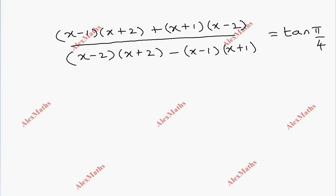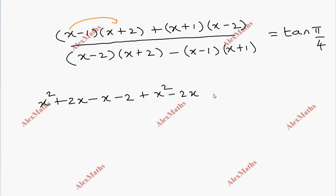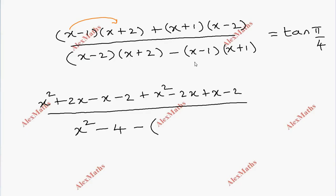If we expand each term: x squared plus 2x minus 1 minus x minus 2, and x squared minus 2x, multiplied by 1 times x minus 2. The denominator uses the identity a plus b into a minus b equals a squared minus b squared, so we expand and apply the formula directly.